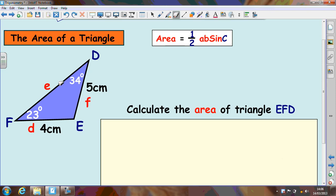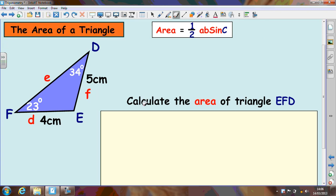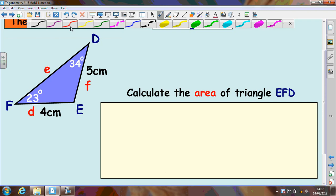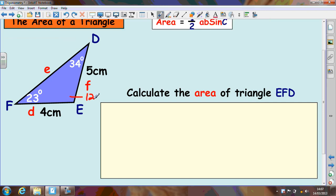In this example we don't exactly have all the information that's required. Calculate the area of triangle EFD. So we've got the 4 and the 5 here which are the surrounding sides but we're missing this angle in the middle. So to calculate the angle in the middle you have to add the 34 and the 23 and subtract from 180. So 34 and 23 make 57. If you do 180 take away 57 you get 123. So that would be the answer to that angle there, 123 degrees.